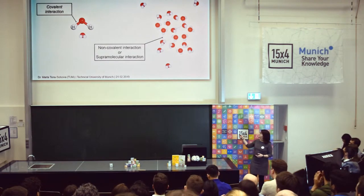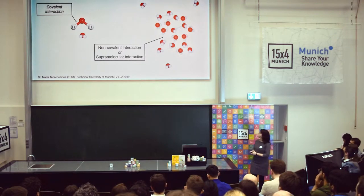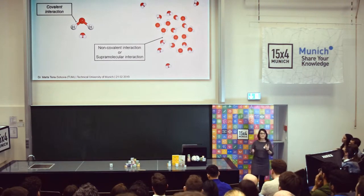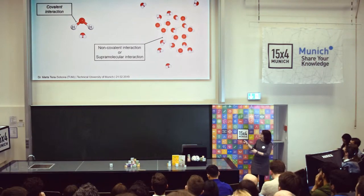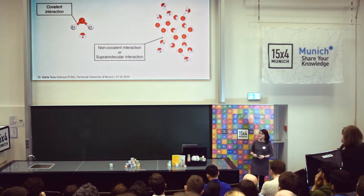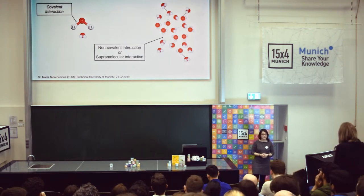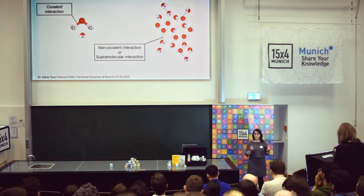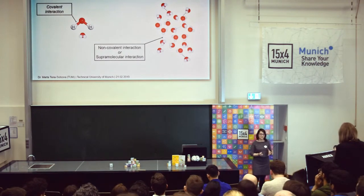Water is actually made out of a network of water molecules, and these water molecules are also interacting with each other through other kinds of interactions, which we call non-covalent or supramolecular interactions. The difference is basically that non-covalent interactions are really, really weak. These interactions are continuously forming and breaking in this network of molecules, and this allows water molecules to get in and out of the network.